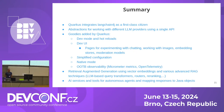To summarize: Quarkus integrates LangChain4j as a first-class citizen. You can work with different LLM providers using a unified API. With Quarkus you get dev mode with hot reloads, the Dev UI, simplified configuration, the ability to compile to native mode with GraalVM, and observability including Micrometer metrics and OpenTelemetry traces.